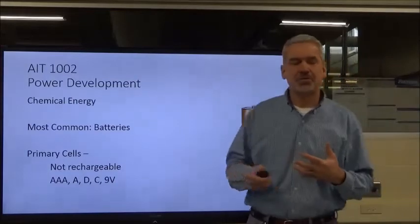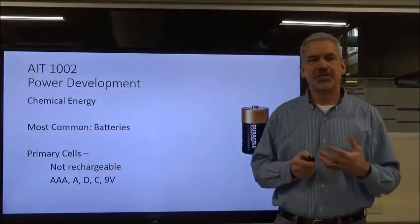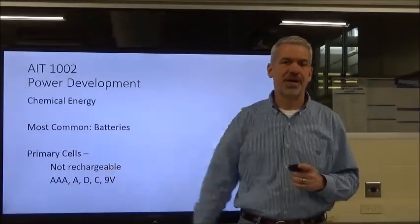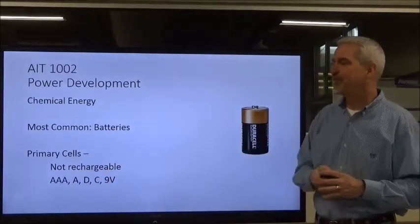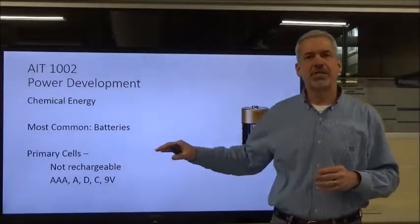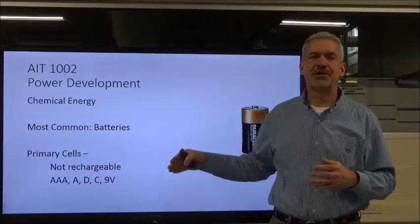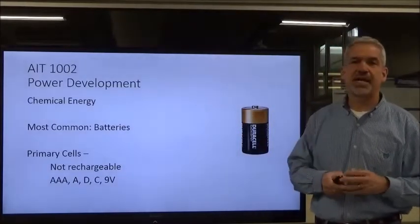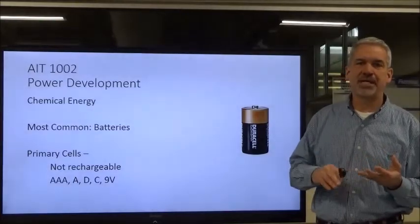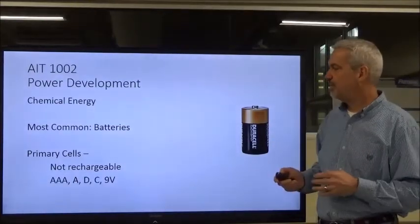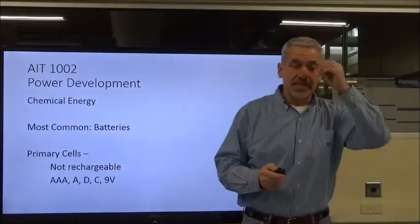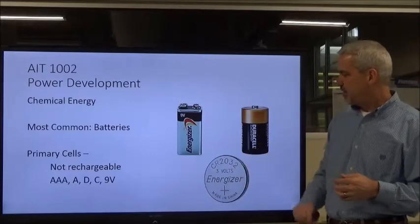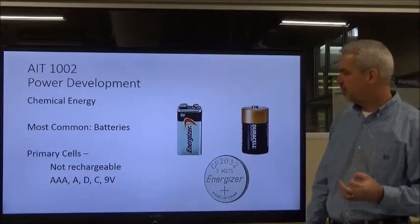Going back to a more practical way of producing chemical energy with batteries: the most common is the primary cell type. Something you might want to pay attention to — primary cell. The most predominant characteristic of a primary cell battery is that it is not rechargeable. It comes in all kinds of different sizes: double-A, triple-A, C, D, nine-volt square. The primary cell is not rechargeable.